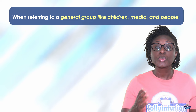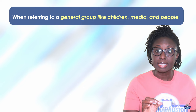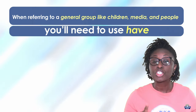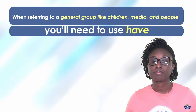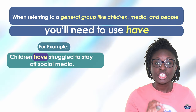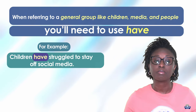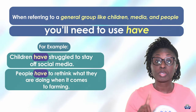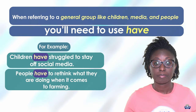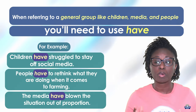When referring to a general group like children, media, and people, you need to use have. For example: Children have struggled to stay off social media. People have to rethink what they are doing when it comes to farming. The media have blown the situation out of proportion.